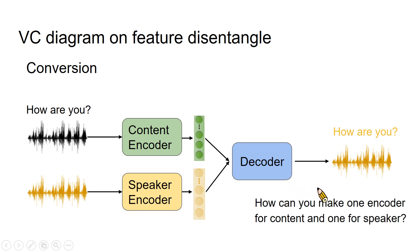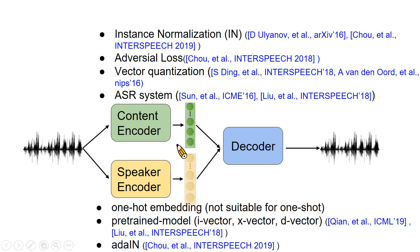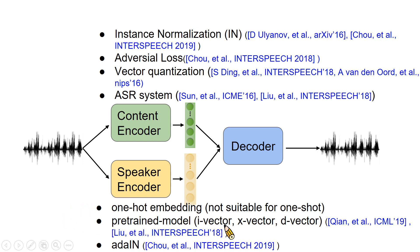The main question is: how can we make one encoder for content and one for speaker? Here we list some common methods. For content encoder, we have instance normalization, adversarial loss, vector quantization, and ASR pre-trained model. For speaker encoder, we have one-hot embedding, pre-trained models like i-vector, x-vector, d-vector, and AdaIN. In this talk, we will focus on models that require no pre-training, like instance normalization, adversarial loss, and AdaIN.